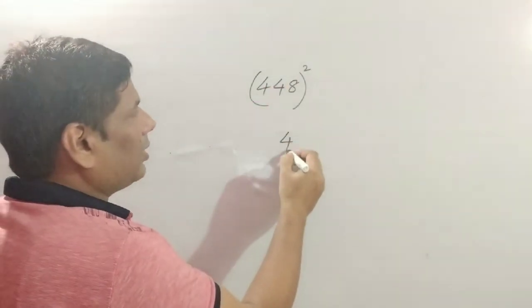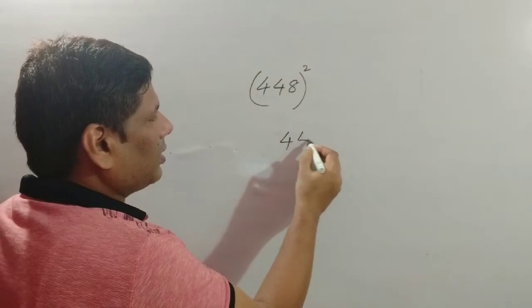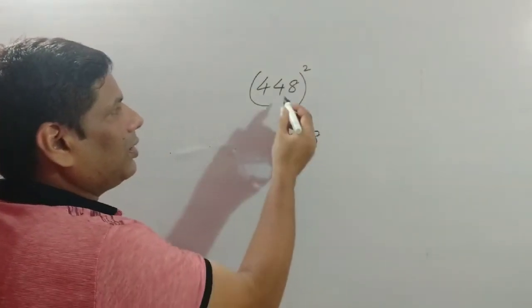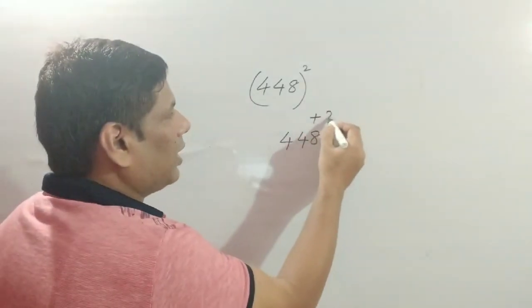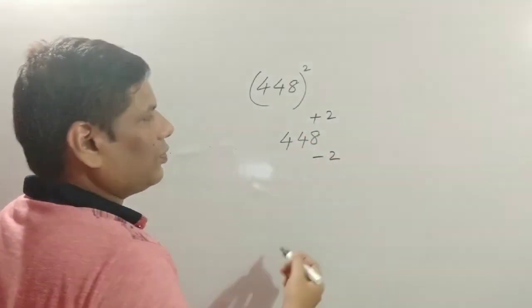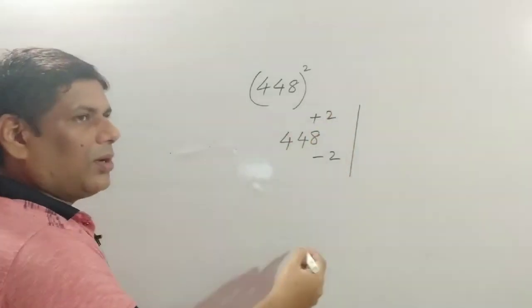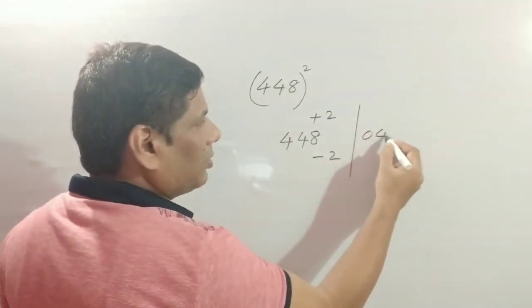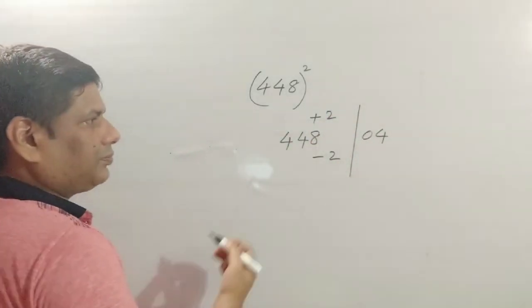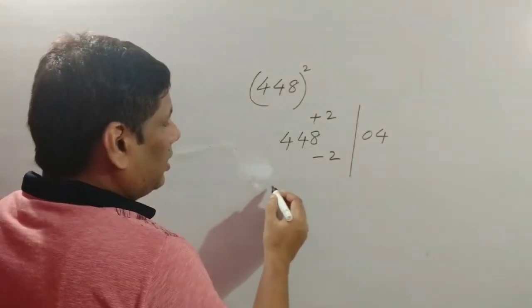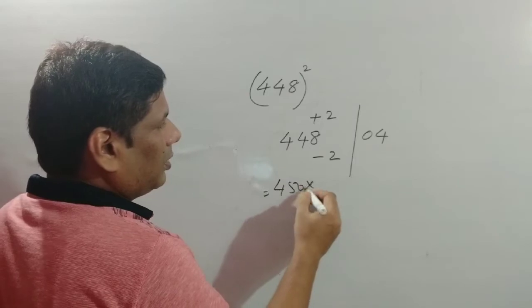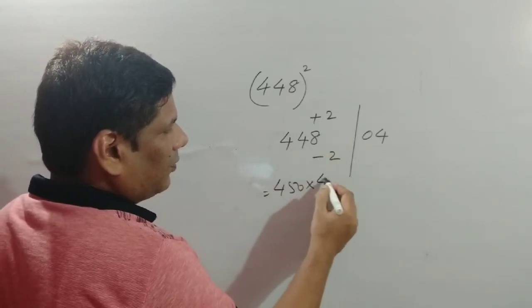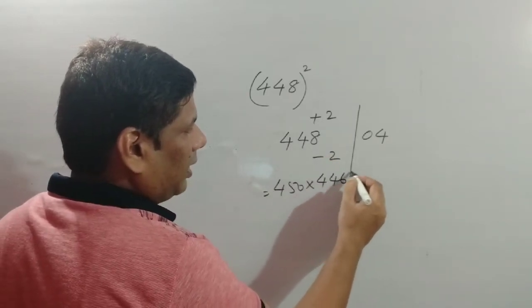The nearest multiple of 50 is 450. So write 448, and to make it 450 we add 2, then subtract 2 here. The square of 2 is 4, written in two digits: 04.